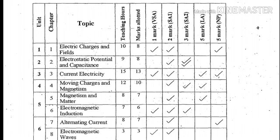If you take a small amount of 1 mark: Electro charge and field is 8 marks. 1 mark is a short answer, 2 mark is a question, 5 mark is a question, and 5 mark is a question. This is the first or second.